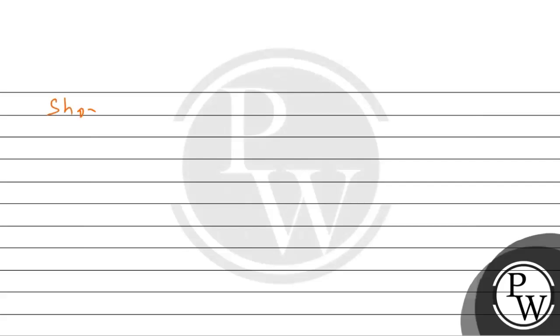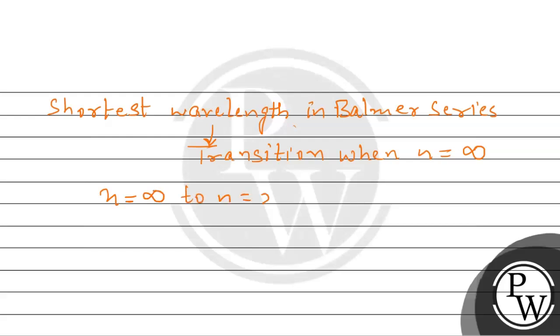यहां पर जो shortest wavelength है in the Balmer series that corresponds to the transition जहां पर जो n की value है is infinitely large. Meaning यह है कि electron जो है वो कौनसे level से कौनसे level तक जाएगी? That is n is equal to infinity to n is equal to 2.